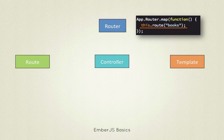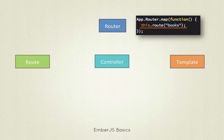Those generated objects are: a route object, a controller object, and a view object - which we won't cover in this course. The view object simply renders templates to the DOM and generates events. So the responsibility of the router is to define URL mapping, create the required objects, and delegate action to the route object.